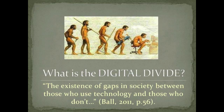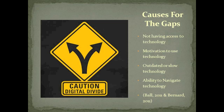What is the digital divide? According to Ball, author of Addressing and Overcoming the Digital Divide in Schools, the digital divide is the existence of gaps in society between those who use technology and those who don't. In order to fully define the digital divide, it is important to look at the causes or reasons for the existence of this gap in society. One of the reasons for the gap is the unequal access to technology. The inequality of access includes one's ability to own technology as well as the ability to keep it up to date and working properly.